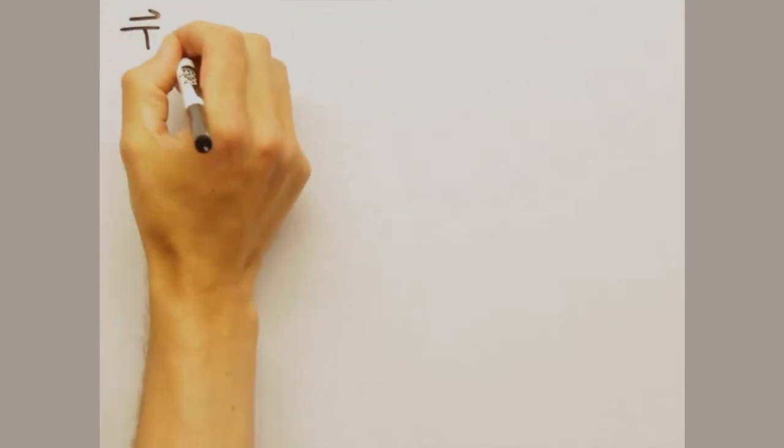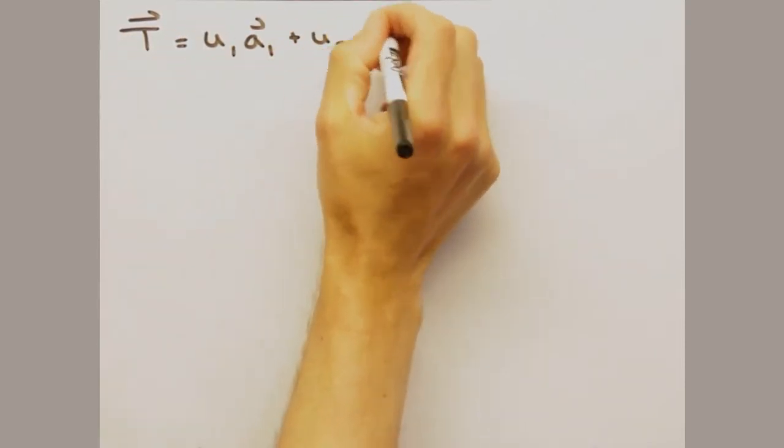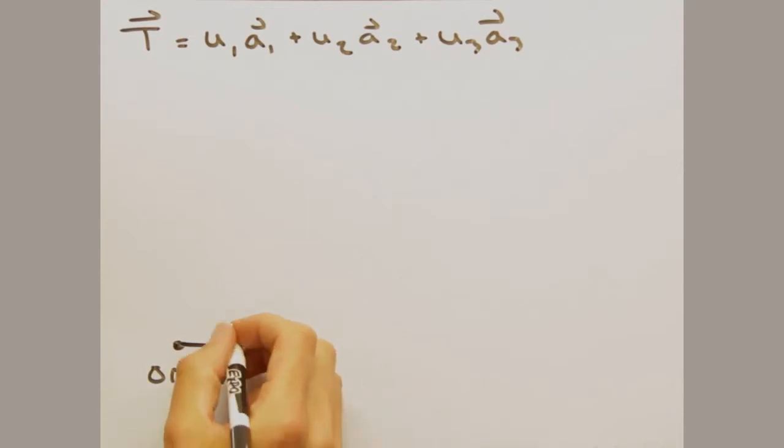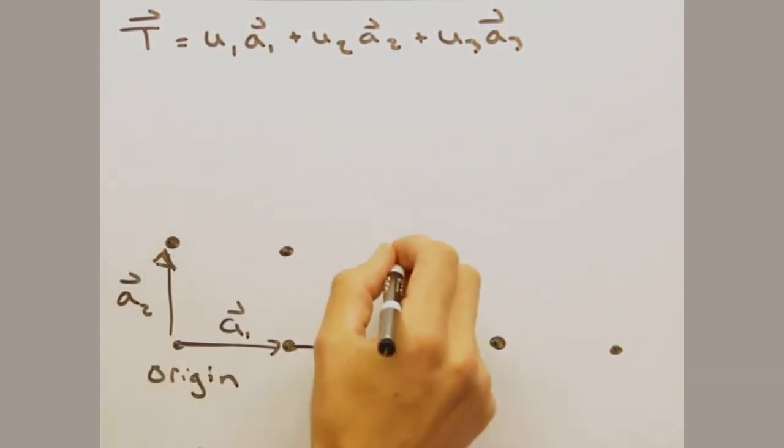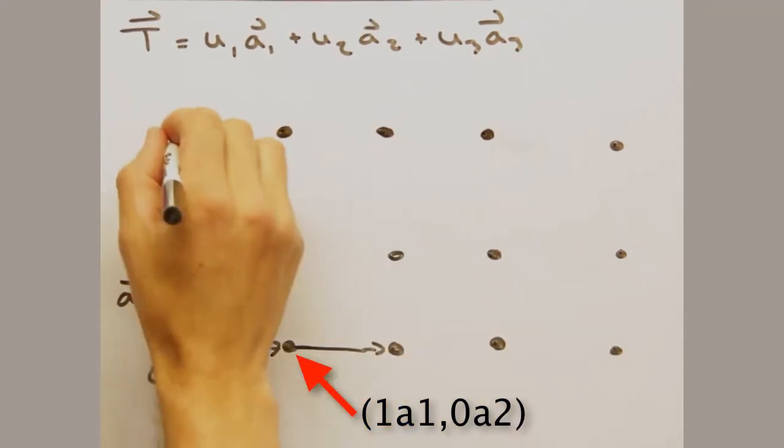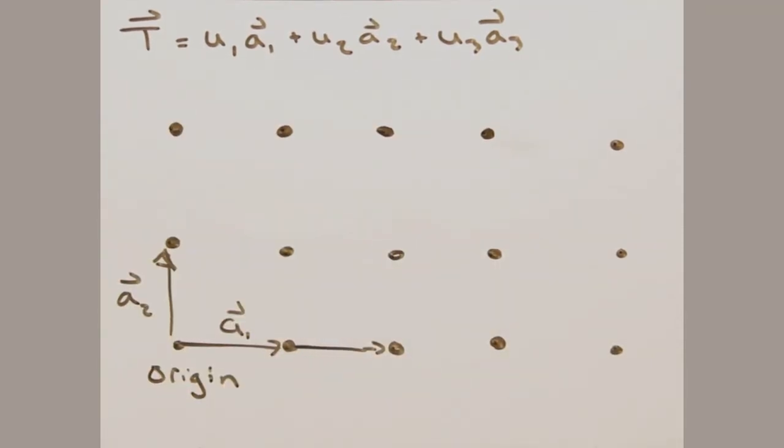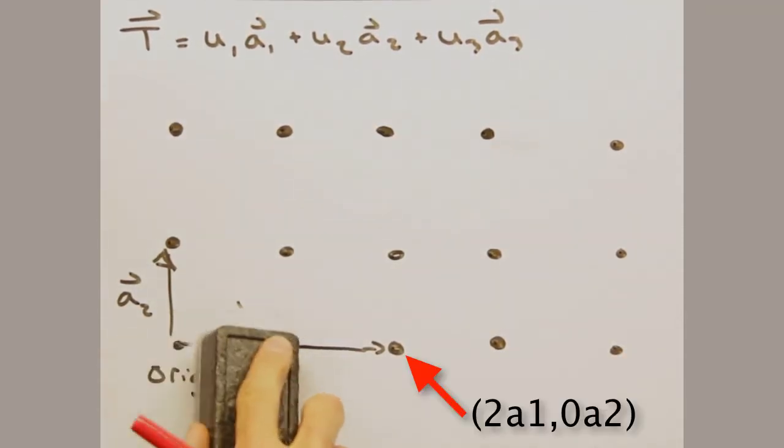For the moment, let's ignore the fact that we have atoms and imagine one point in space. Using the vector t that we developed before, we can populate space with a framework of points. Or this point is 1A1, 0A2, 2A1, 0A2, and so on and so on.